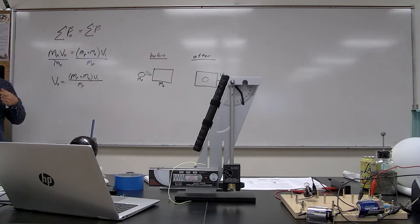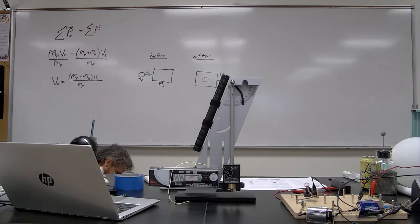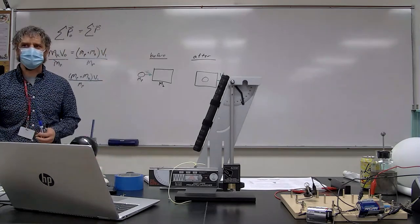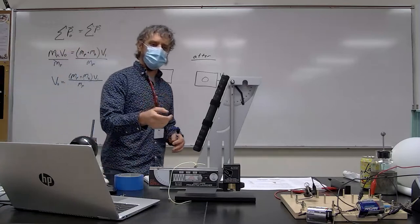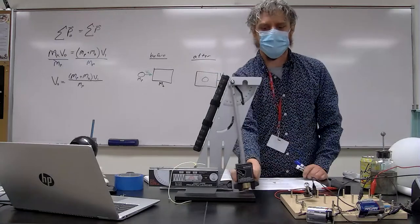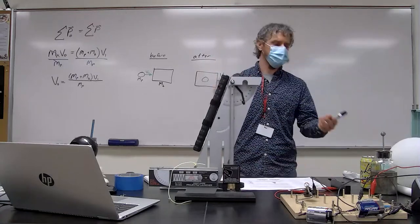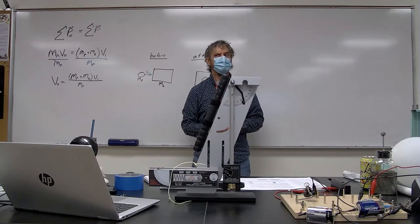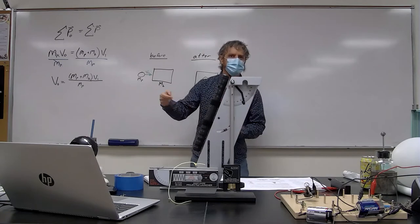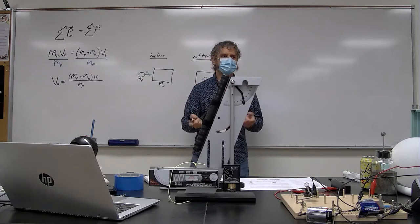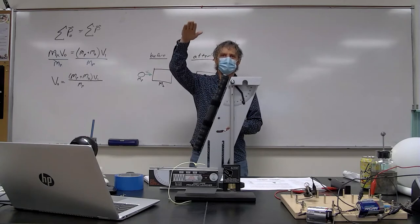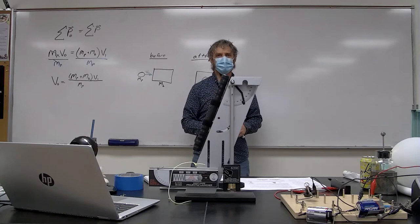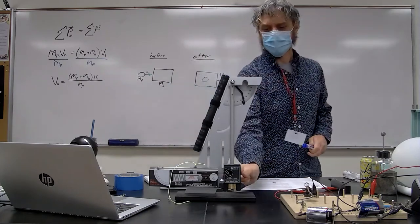The problem is I don't have v₁. I can easily measure the masses, but I don't know v₁ — that's what the second part of the motion is for. That's why we measure the angle the pendulum swings up. What physics concept can we use to relate the speed right after the collision to the height the pendulum rises? Conservation of energy.